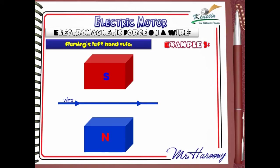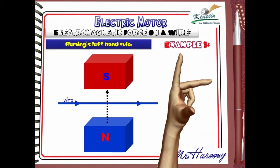Example 3: here is the magnet and the wire. Press the pause button if you want to think about it yourself. The dotted black arrow indicates the direction of the magnetic field from north to south. Fleming's Left Hand Rule is applied with the first finger pointing to the magnetic field from north to south, in this case upwards.